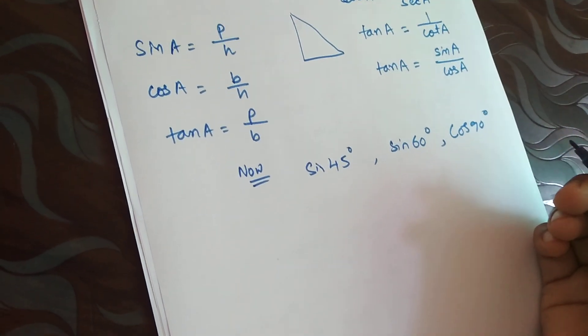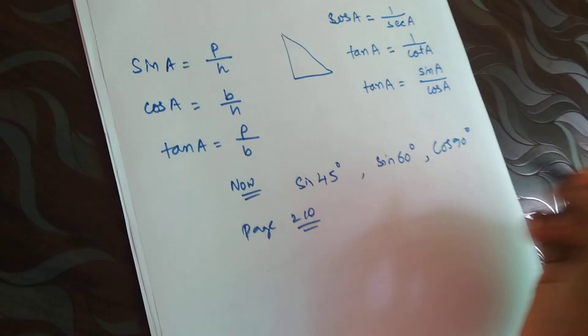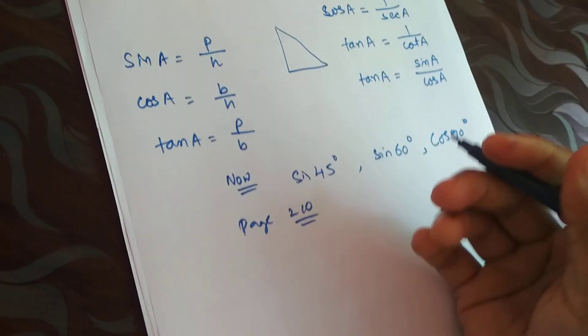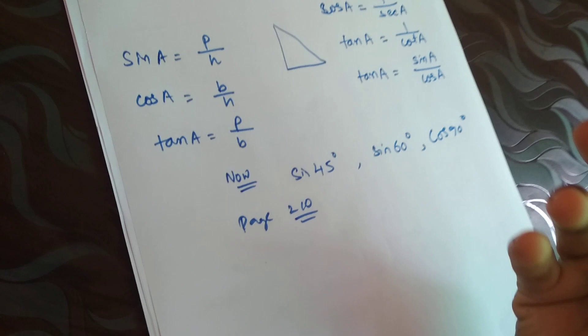One table is mentioned on page number 210. But in the exam it's not possible for us to memorize all those terms - what is sine 45, what is sine 60, what is sine 90.